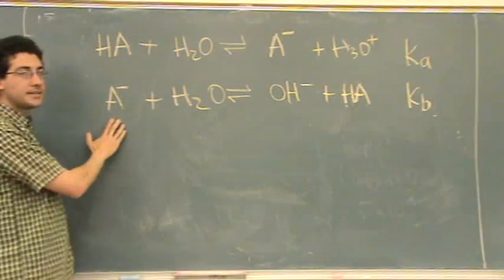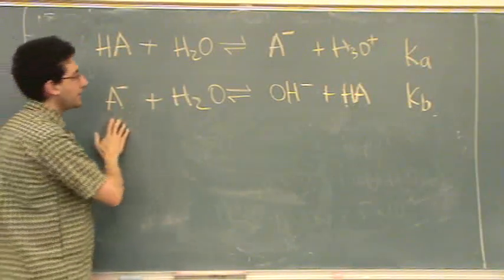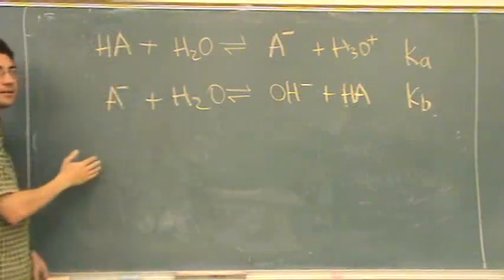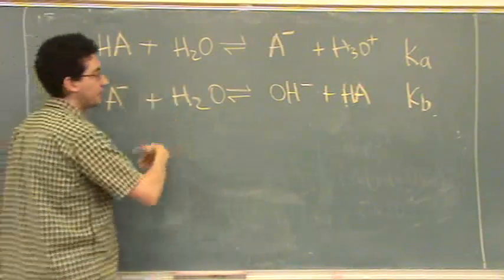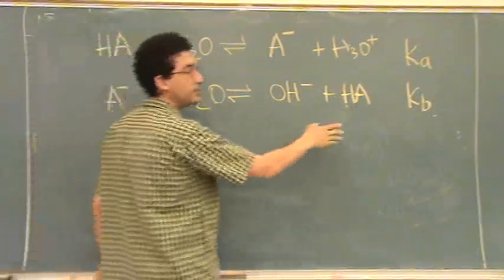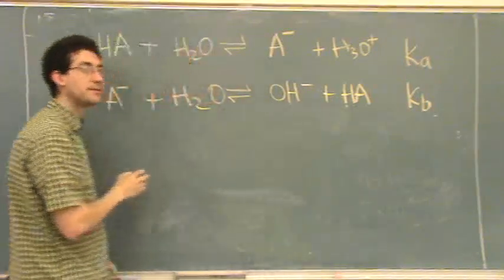If this does not accept protons very well, then that means a forward reaction does not happen very well. In fact, the reverse reaction might even be stronger. So in that case, we say KB is small for a weak base.